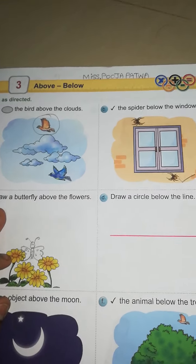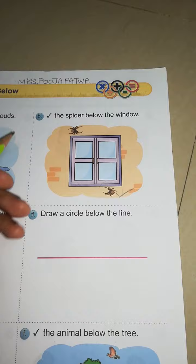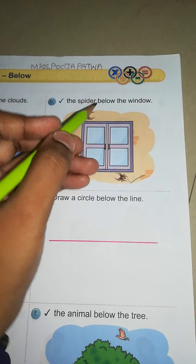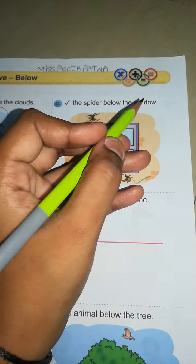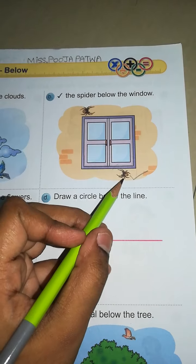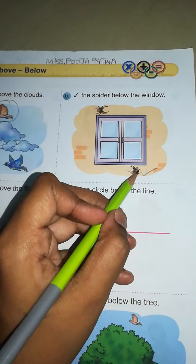B: Take the spider below the window. Below means downside. Downside you can see the spider — take it here.